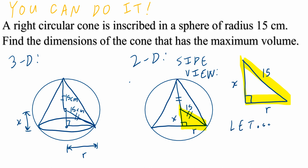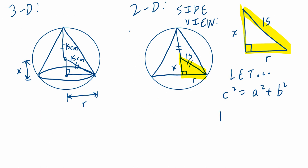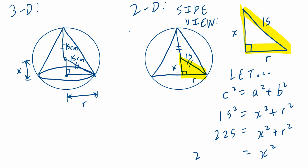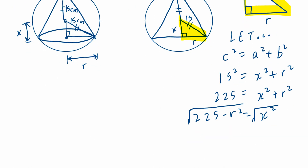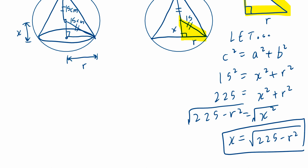You can write down the let's statement on your own. Based on this right-angle triangle, c squared equals a squared plus b squared, which means 15 squared equals x squared plus r squared. If you isolate for x: 225 equals x squared plus r squared, or x squared equals 225 minus r squared. Taking the square root of both sides — since we're talking about length, only the positive case matters — x equals the square root of 225 minus r squared. This is the equation of constraint.